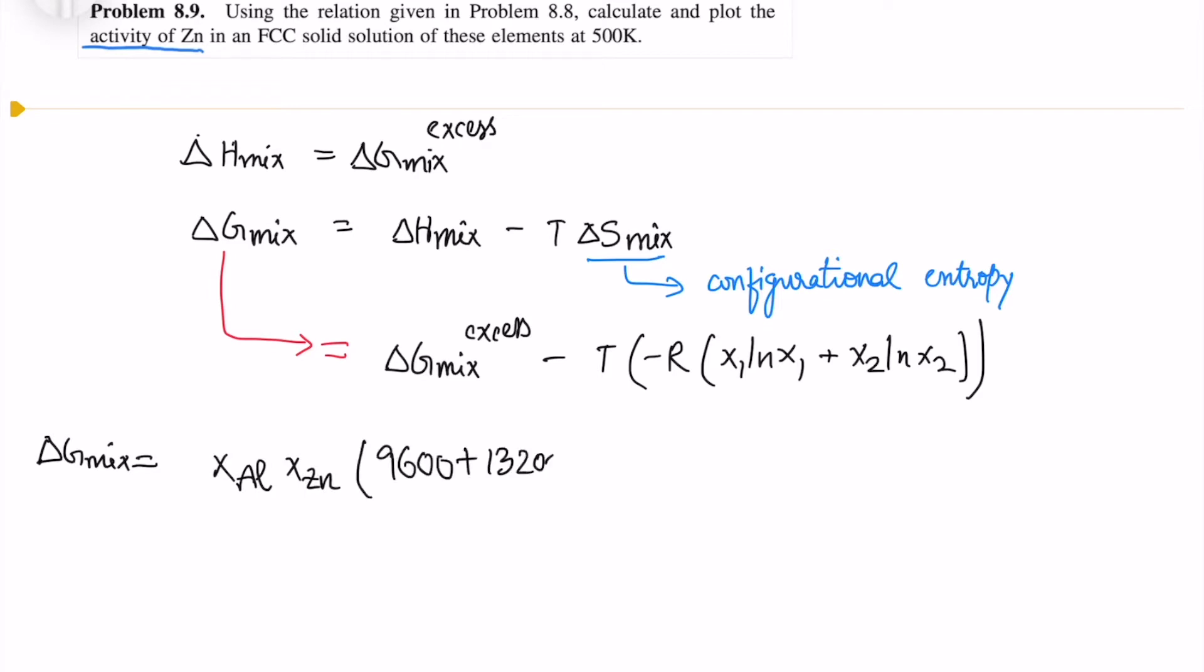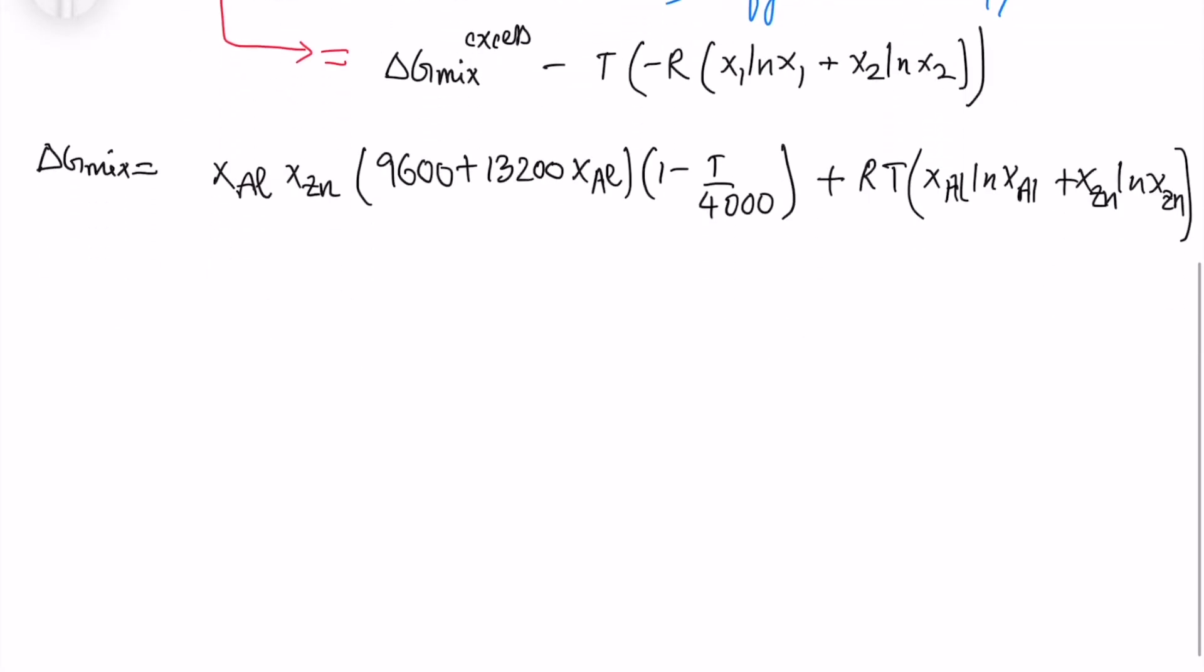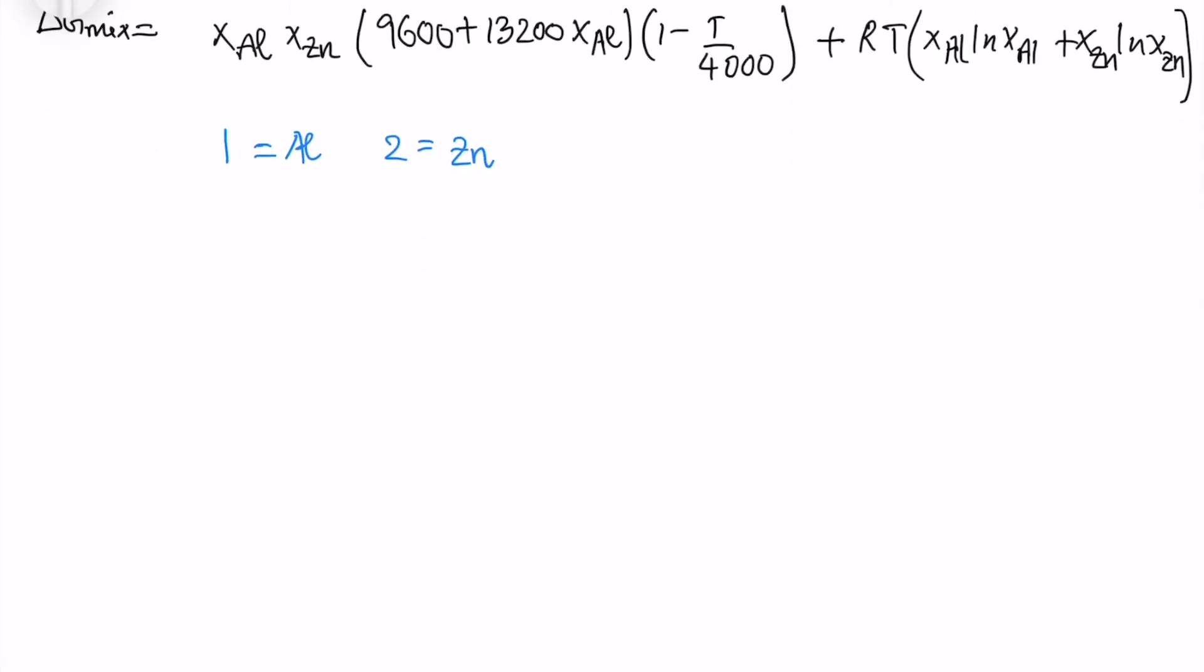Now the delta G mix excess is given in the 8.8 question. So that is the part I am writing down here, as well as the configurational entropy. Now I assume that 1 is aluminum and 2 is zinc.